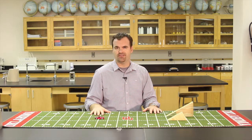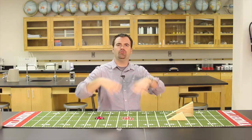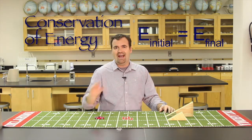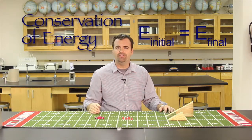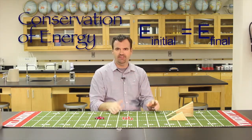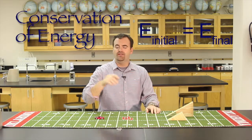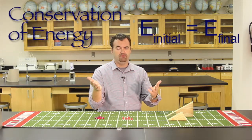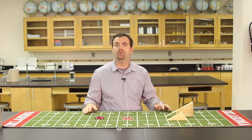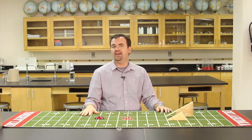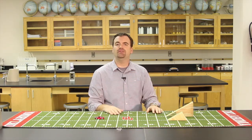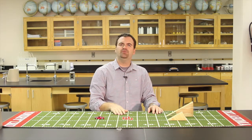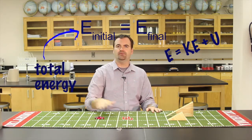That brings us to the conservation of energy. The conservation of energy looks at the total energy of a system, symbolized with capital E. EI is equal to EF — that is the conservation of energy. It tells us that the initial total energy of a system is equal to the final total energy of a system. So energy wasn't created or destroyed; it was perhaps only transferred. The total energy is made up of the only two types of energy: kinetic energy and potential energy.